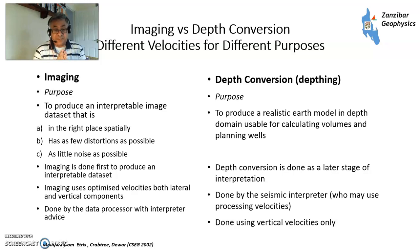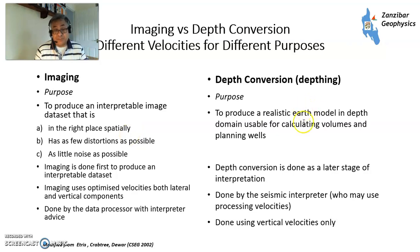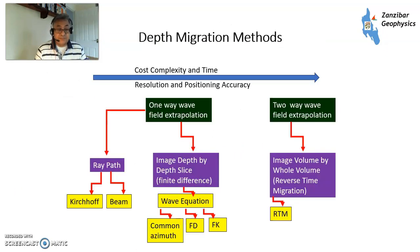Regarding velocities for imaging versus depthing — based on a 2002 paper by Etris, Nick Crabtree et al. — different velocities serve different purposes. Imaging velocities, used when building a model for migration, aim to get the right image positioned correctly with minimal distortions and noise to produce an interpretable dataset. Depthing velocities give you a realistic earth model for calculating volumes and planning wells. Traditionally, you'd put your pre-stack depth migration volume back into time, interpret in the time domain, then depth convert using a separate velocity set.